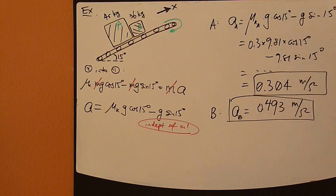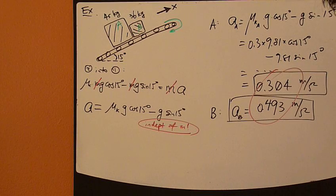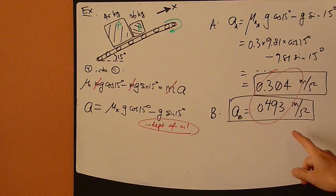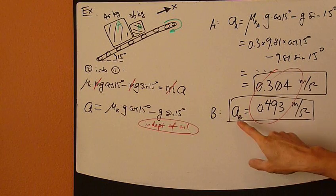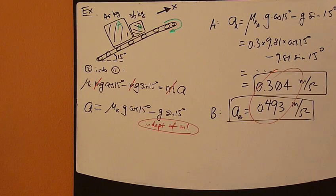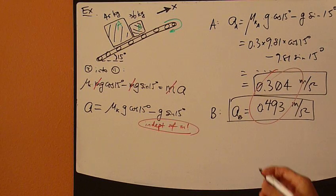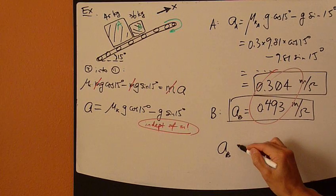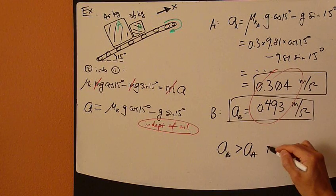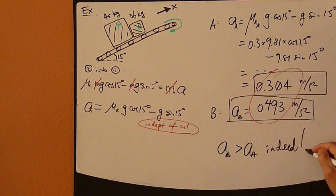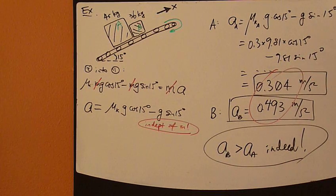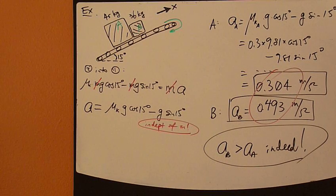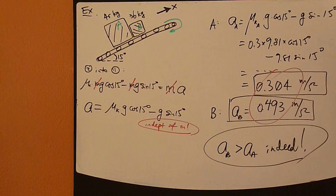There we have it, a_A and a_B. Now compare these two numbers. Are the assumptions that you made earlier correct? That is, we assume that a_B is greater than a_A. Yes, indeed, a_B is greater than a_A. Therefore, assumption is correct, the results are correct, and they're acceptable. And that is it.